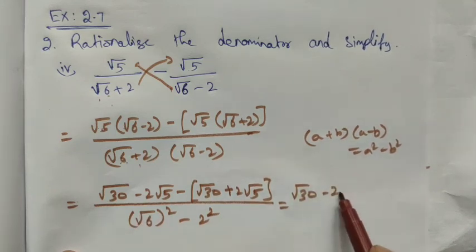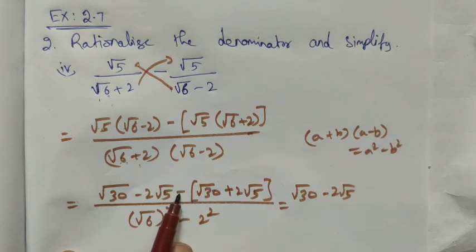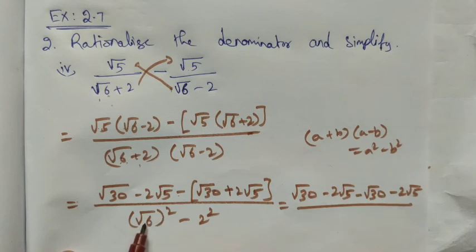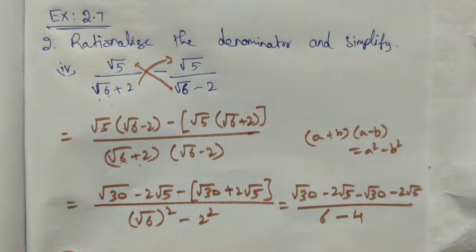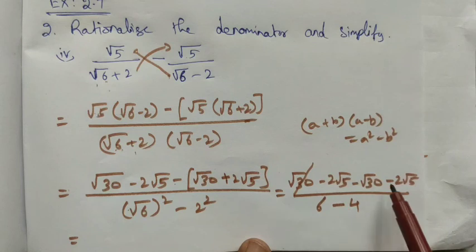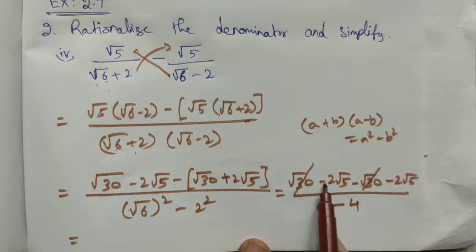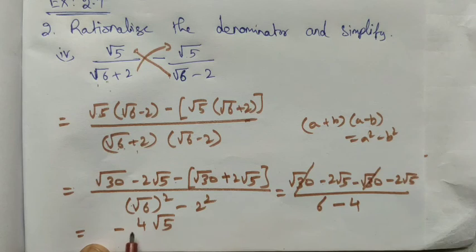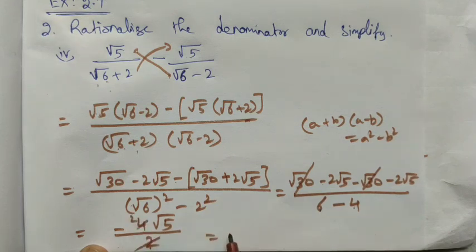Removing the brackets: √30 - 2√5, and then minus into minus gives -√30, minus into plus gives -2√5. In the denominator: root and square cancel to get 6, minus 2² = 4. The √30 terms cancel (plus and minus). Both remaining terms have negative symbols: -2√5 - 2√5 = -4√5. Divided by 6 - 4 = 2. Simplifying: -4√5 / 2 = -2√5. That is the answer.